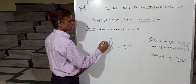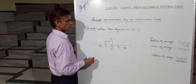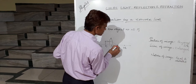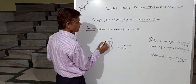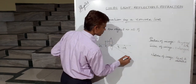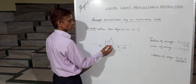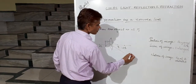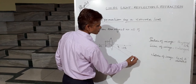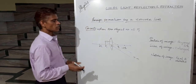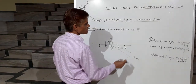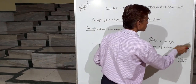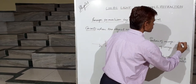Take one ray parallel to the principal axis — this ray passes through focus F2 after refraction. Take another ray through the optical center — this ray goes as it is without deviation. These two rays are parallel to each other, so they meet at infinity. The image is formed at infinity.